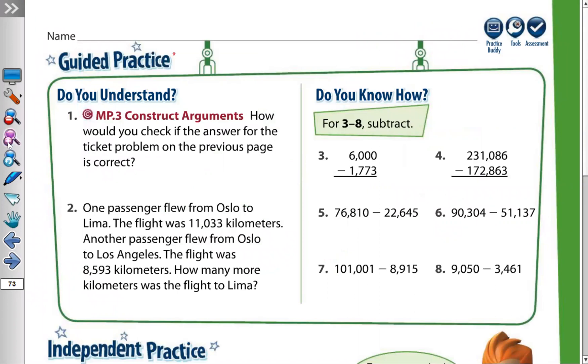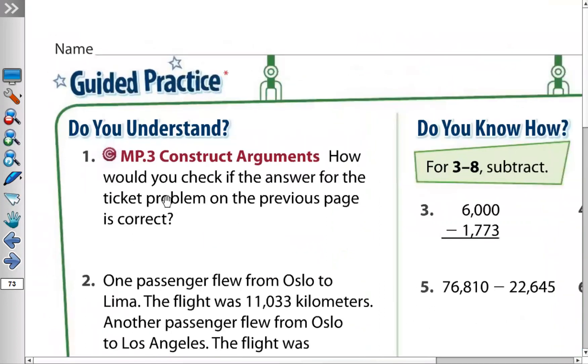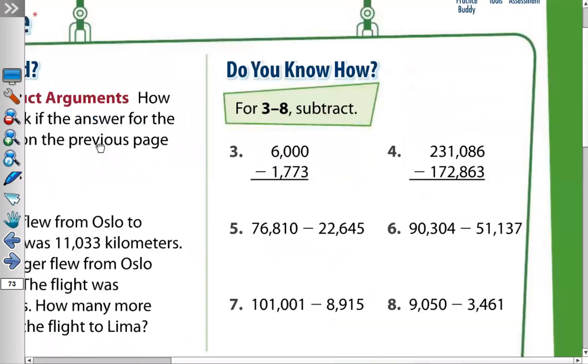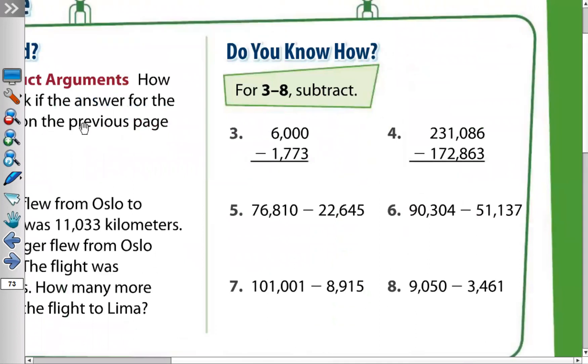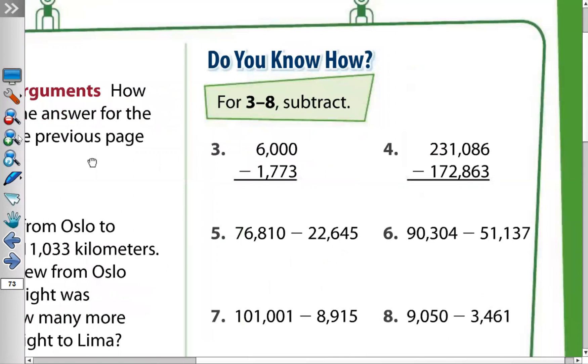For 3 to 8, subtract. In question number 3, 6,000 minus 1,773. Here, we have zeros in subtraction. So how we will do it? It's easy.